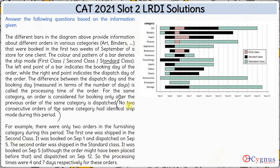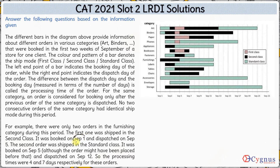For example, if there were only two orders in the furnishing category during this period — and we can clearly see there are only two orders here, each being a single order. The first one was shipped in second class and the second order was standard class. The first order was booked on September 1 and dispatched on September 5.